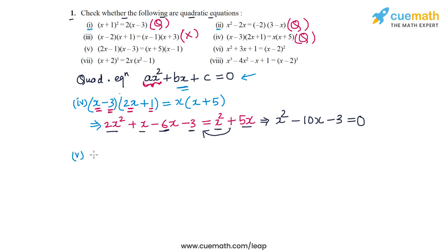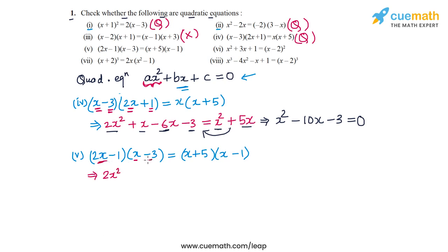In Part 5 the equation is (2x − 1)(x − 3) = (x + 5)(x − 1). Expanding the left side: 2x² − 6x − x + 3. On the right side: x² − x + 5x − 5.